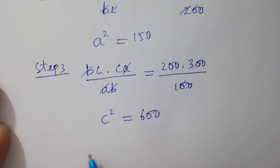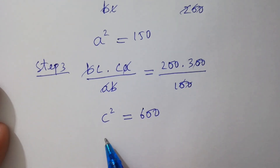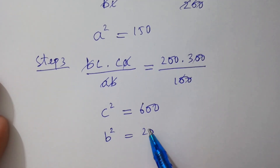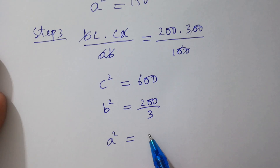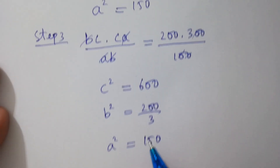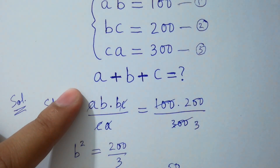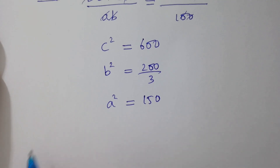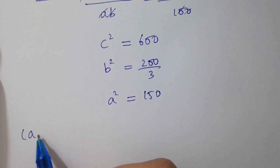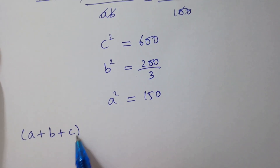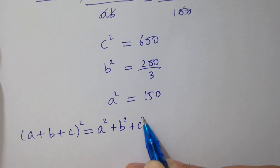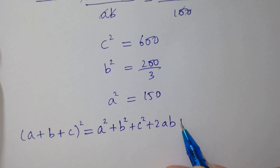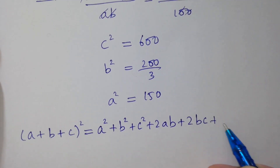So we have: a squared equals 150, b squared equals 200 over 3, and c squared equals 600. To find the value of a plus b plus c, we know that (a + b + c)² equals a squared plus b squared plus c squared plus 2ab plus 2bc plus 2ca.